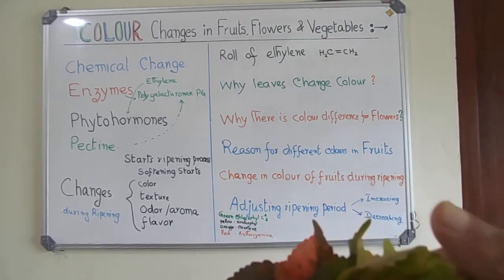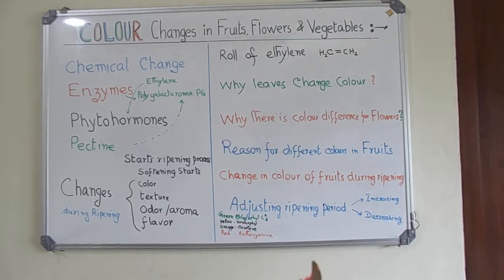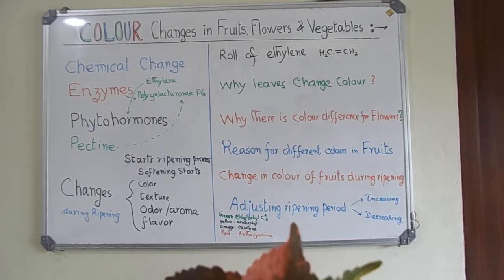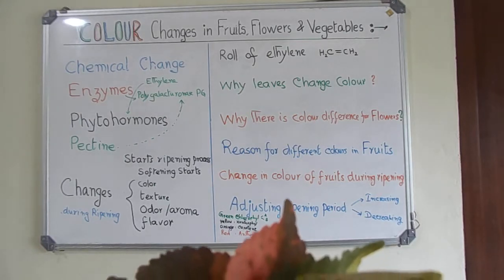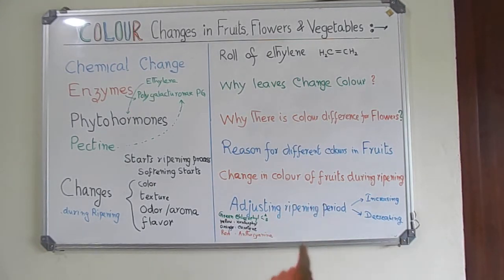In nature, a single tree or plant can have different colors. Not only that — a very fresh leaf from a mango tree is having copper brown color, whereas the mature leaf is a deep green color.